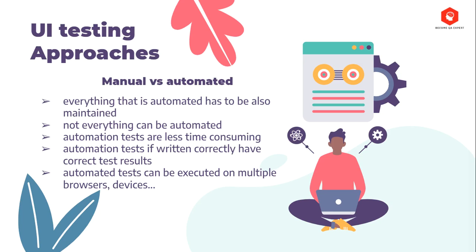What are the other pros and cons for automation and manual testing? Well, automation tests, if written correctly, always have correct test results no matter how many times they are executed. On the other hand, if a manual tester does it, maybe if he's exhausted — after all, he's just a human — he makes mistakes and in some cases he will not notice an issue. And automated tests can be executed at the same time across multiple browsers and devices, which is something human beings cannot do.